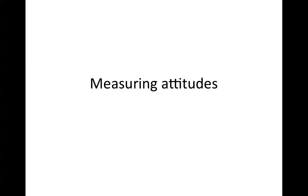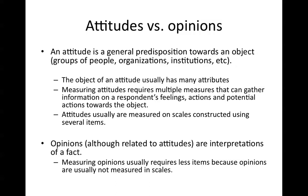Now we're going to talk about measuring attitudes, opinions, and scales. An attitude is different than an opinion. An attitude is really just someone's predisposition towards an object, people, organizations, and so on. It usually has many attributes, and it requires multiple measurements to gather any information on their true feelings. You have to ask many questions in order to truly understand what their attitude is about a particular group of people or organization.